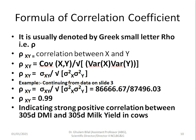Putting in the values, we have the covariance of xy from slide 3 as 86,666. We multiply the variance of x by the variance of y and take their square root, which gives 87,496. The result is 0.99, indicating a strong positive correlation between 35-day dry matter intake and 35-day milk yield. Correlation is interdependent — no trait is dependent or independent; both are independent of each other. Correlation also has no unit.